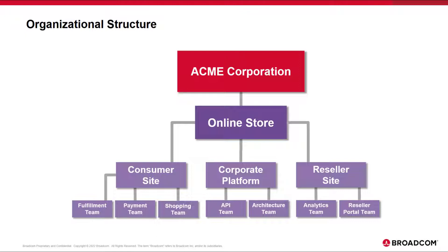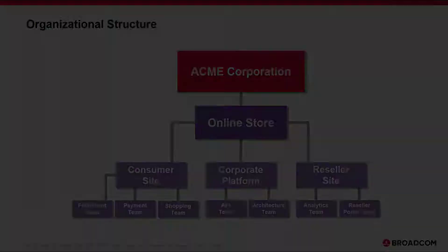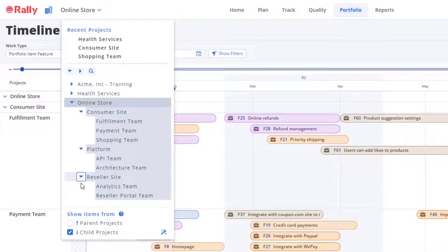You should organize this structure according to the delivery groups that will be working together to deliver a specific product, service, or component. Because organizations can be structured in a variety of ways, bear in mind that these delivery groups, and this structure in Rally, might be different from your organizational structure. The structure you build here in the project hierarchy is simply a container for the work that the collection of delivery groups or teams will deliver in support of your portfolio investments.